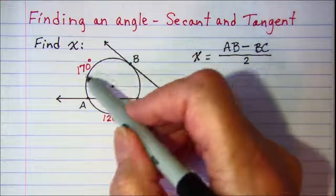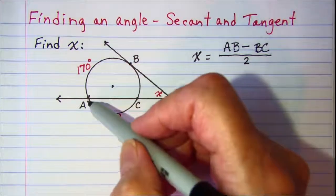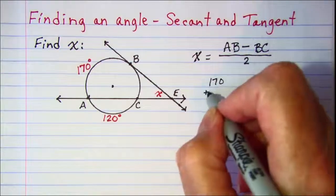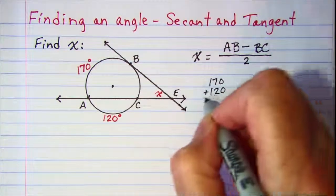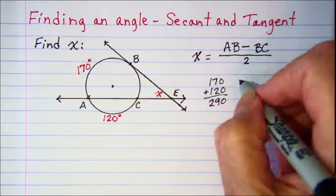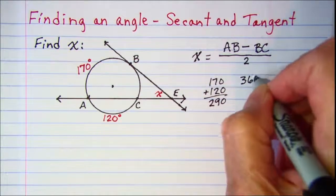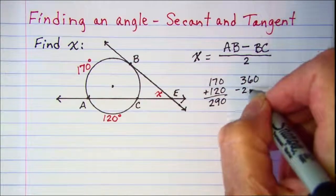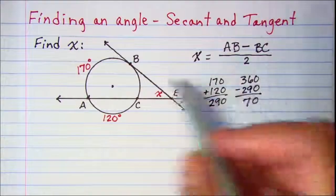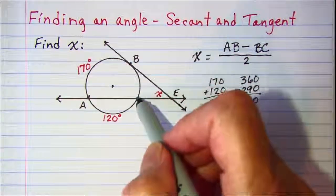So we can take 170 plus 120 and subtract that total from 360 to get the measure of this intercepted arc.